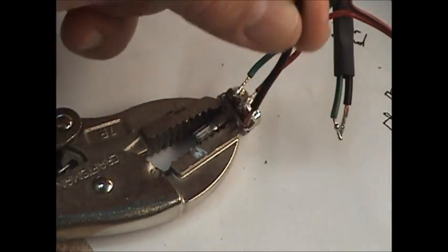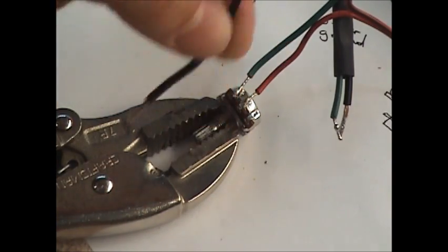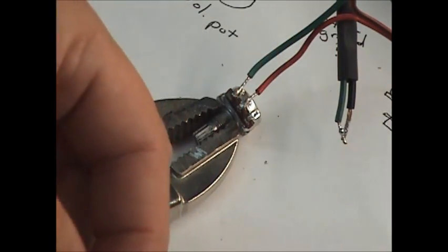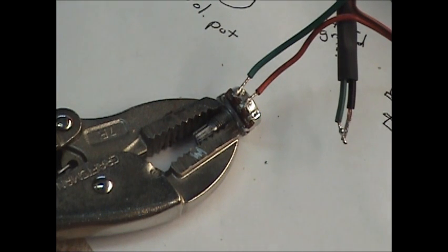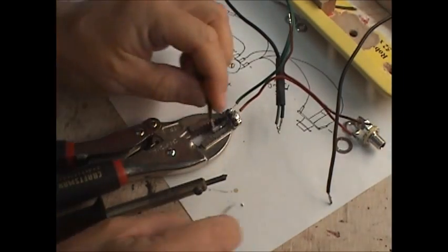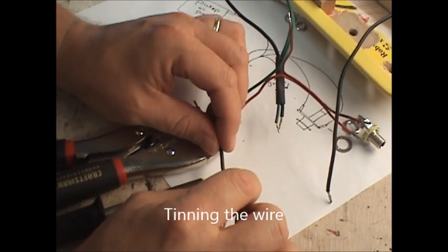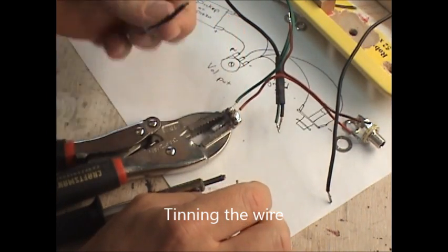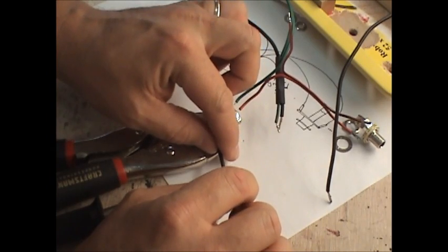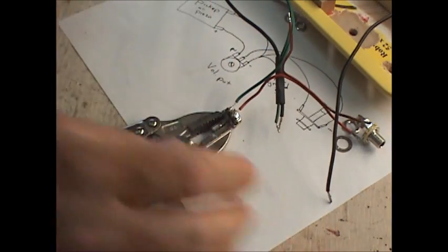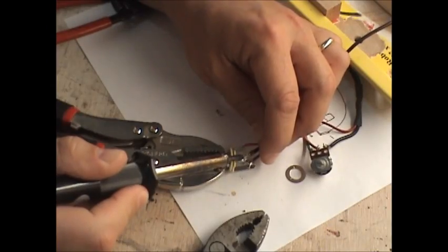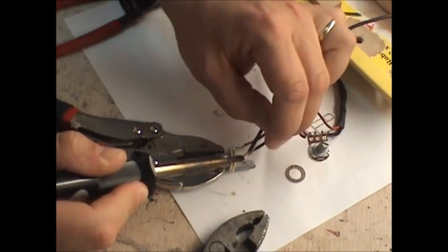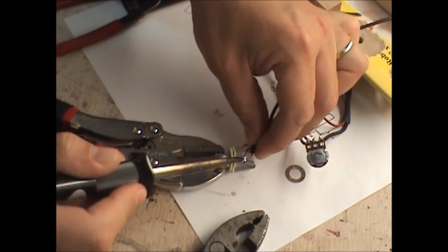To keep things a little easier, I'm going to put a small jumper coming off the tab and ground everything to this, and maybe put the bridge ground on the jack.